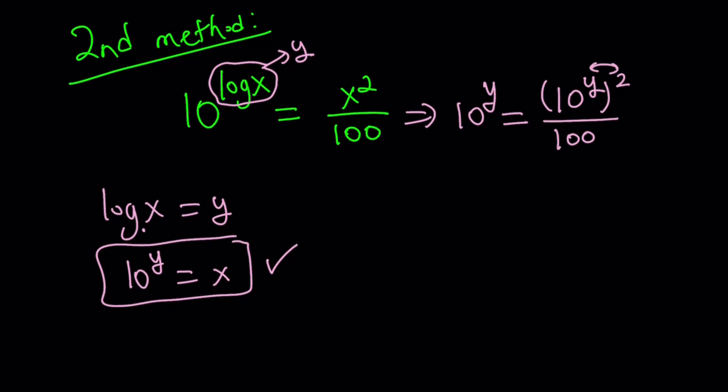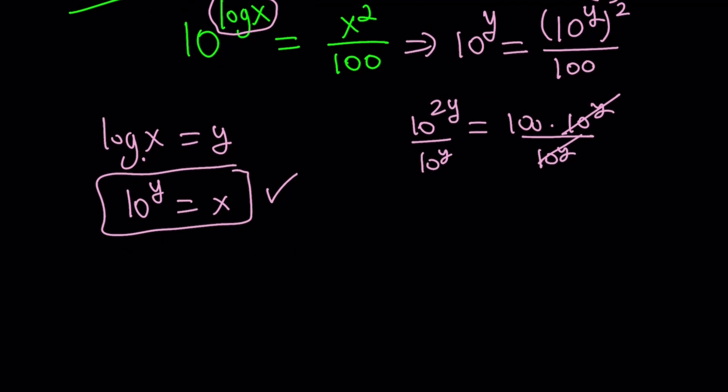Let's go ahead and multiply these exponents. That gives us 10 to the power 2y. And multiply these together, 100 times 10 to the power y. Obviously, it's tempting to divide both sides by 10 to the power y at this point. And 10 to the power y cannot equal 0, so that's okay. So let's do it. Divide by 10 to the y. And from here, subtracting exponents gives us 10 to the power y equals 100, and y equals 2.